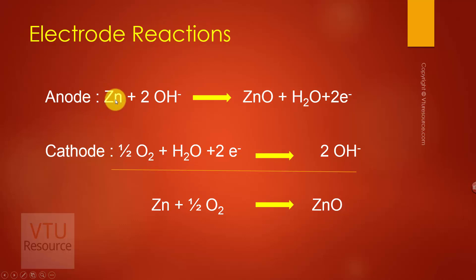At anode, zinc undergoes oxidation in presence of electrolyte to give zinc oxide, water, and two electrons. So these two electrons are used up in the cathodic reaction.